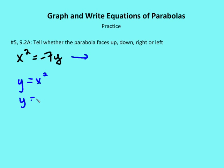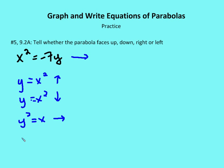y is equal to negative x squared — that parabola faces down. When we have y squared is equal to x, that parabola opens to the right. When we have negative y squared is equal to x, that parabola opens to the left.